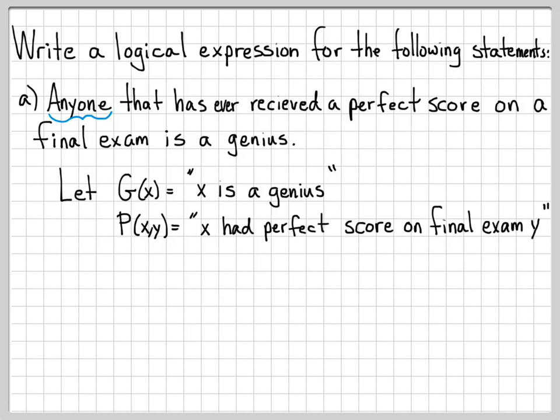One of those is anyone. So usually when we see anyone, that's a big clue that we need to use a for all in our logical expression. The term has ever, that has to do with there is an existence. So that's a clue to use the existence symbol, there exists. Because if you've ever done this, that means if there exists one time that you've done this, received a perfect score.